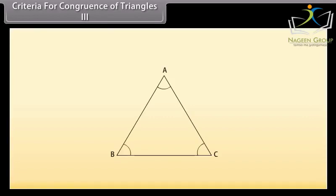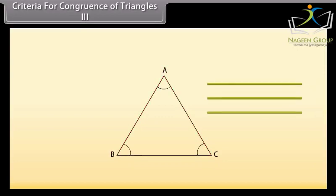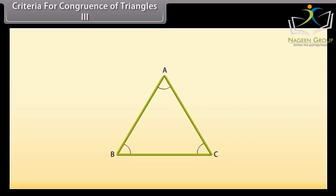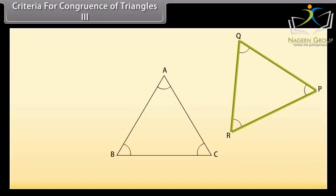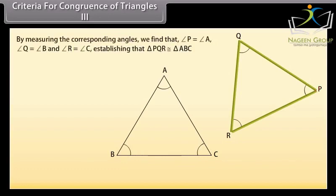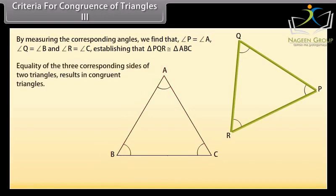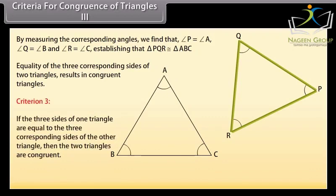Criteria for congruence of triangles 3. To explore another criterion, we again take a triangle ABC. Take 3 thin sticks equal in length to sides AB, BC and CA of triangle ABC, and place them in any order to form triangle PQR. By measuring the corresponding angles, we find that angle P is equal to angle A, angle Q is equal to angle B, and angle R is equal to angle C, establishing that triangle PQR is congruent to triangle ABC. Thus, we have Criterion 3: if the 3 sides of one triangle are equal to the 3 corresponding sides of the other triangle, then the 2 triangles are congruent. This is referred to as SSS — side-side-side congruence rule.